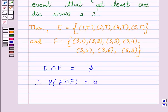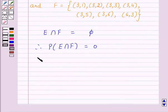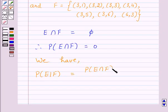Now, according to our key idea, we have P(E|F) = P(E∩F) / P(F), provided P(F) ≠ 0.